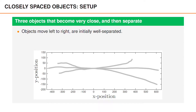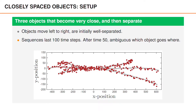In the second example, the main challenge is that the objects are very closely spaced for some time before they separate again. The objects move from left to right and are well separated at the beginning and at the end of the sequence. The entire sequence lasts for 100 time steps. During the parts when the objects are well separated, it's possible to track them fairly accurately, but it's difficult to tell if the object that started in the middle on the left continued straight, or if it went up or down towards the end of the sequence.